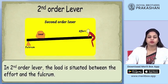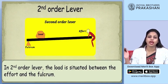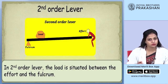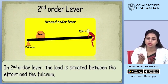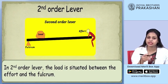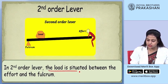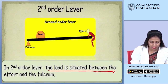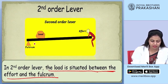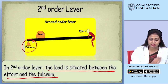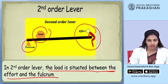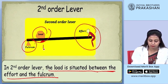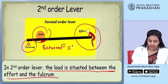When we talk about lever of second order, the positions of effort, load, and fulcrum change compared to the first order. In the first order, the fulcrum is placed between the effort and the load. But in the second order lever, the load is situated in between the effort and the fulcrum. As you can see in the image, the fulcrum is at one edge, the load is in between, and then the effort is applied at the far end — meaning the load falls between the fulcrum and the effort.